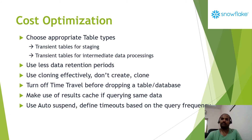When it comes to table types, choose appropriate types based on requirements. For storing staging table data, use transient tables because there is no time travel cost or failsafe cost. If data is needed again, it can be retrieved from the source. So for staging and intermediate data processing, transient tables are always the best practice. Also, use less data retention periods. Enterprise and Business Critical editions support time travel up to 90 days, but choose an appropriate retention period like a week, 10 days, or 30 days based on requirements. More retention period means more cost.